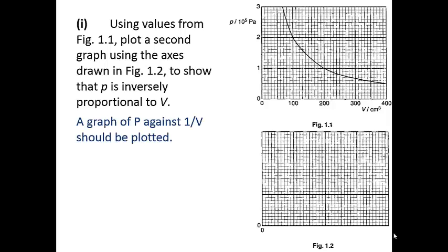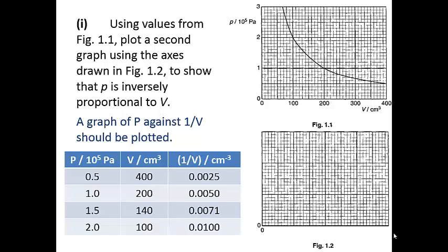The graph of P against 1 over V should be plotted. So from the graph, we can get a table of values and plotting it, we get a straight line graph.